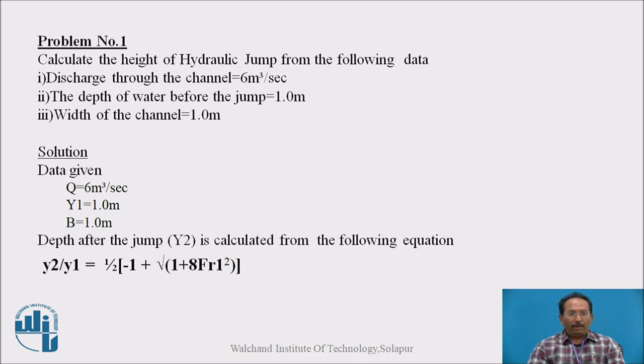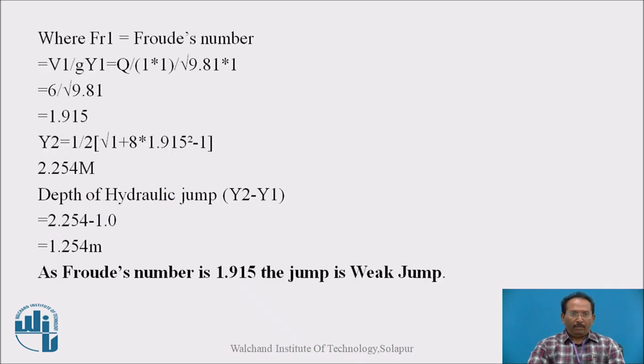Here discharge is given as 6 meter cube per second denoted as capital Q. Depth before jump y1 is 1 meter. Width b is 1 meter. Now depth after the jump y2 is calculated from the following equation. That equation also we can call the equation for the conjugate depth. That is y2 upon y1 is equal to half into bracket minus 1 plus under root of 1 plus 8 Fr1 square.